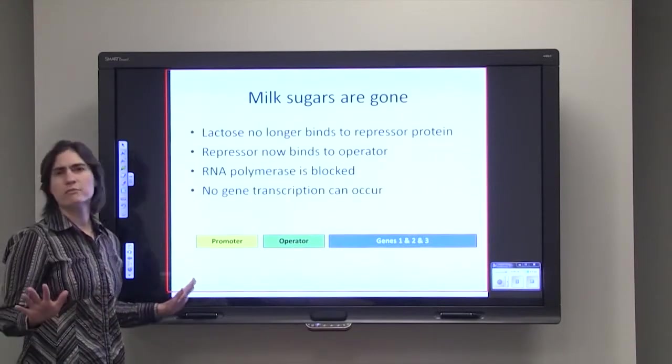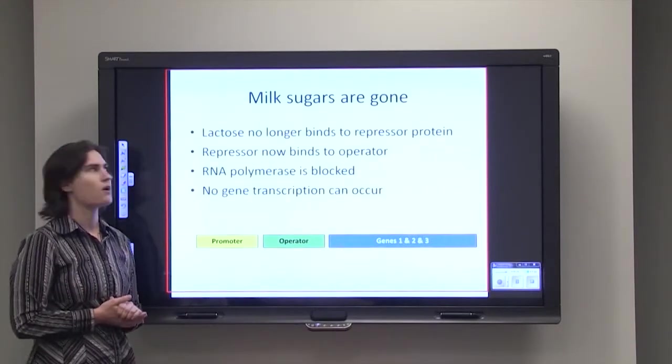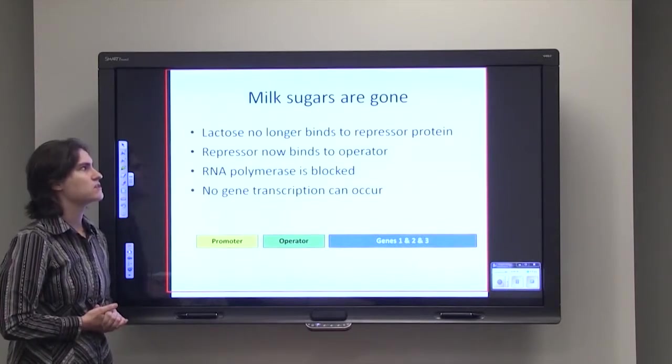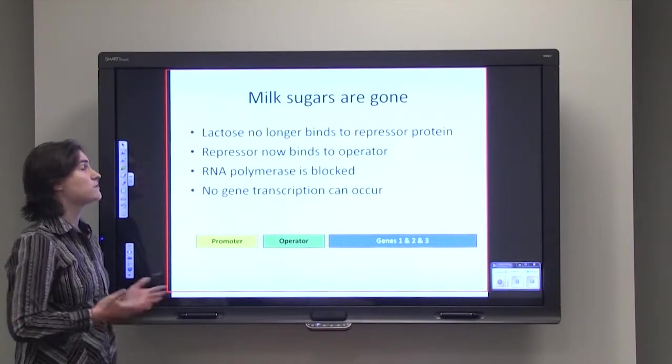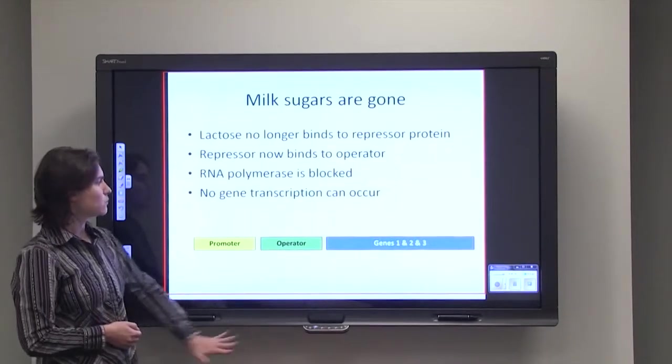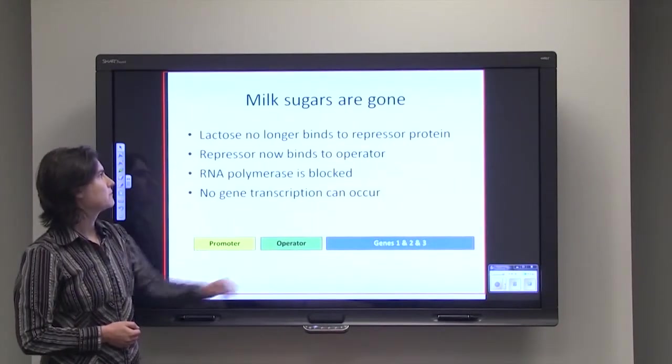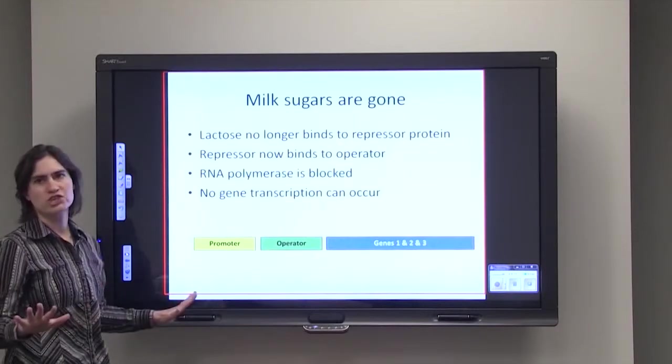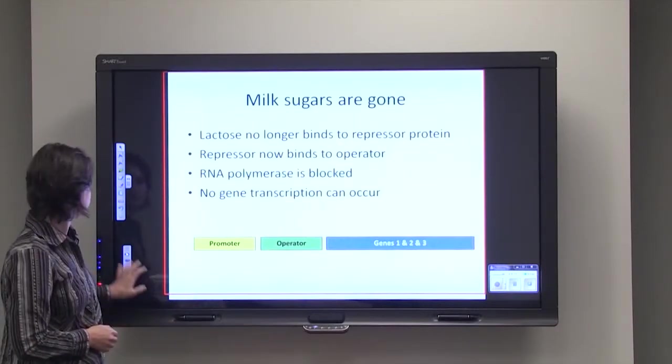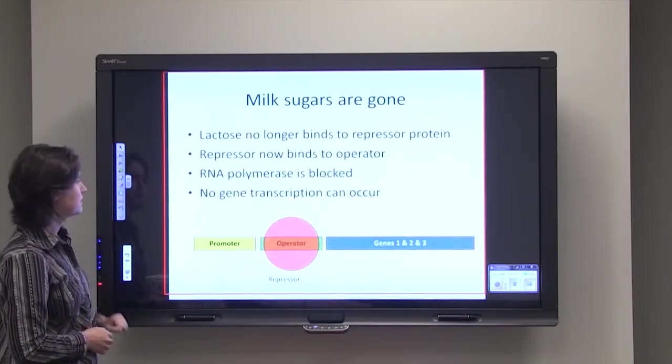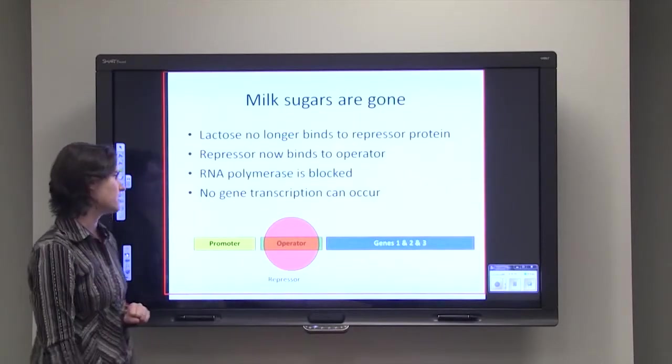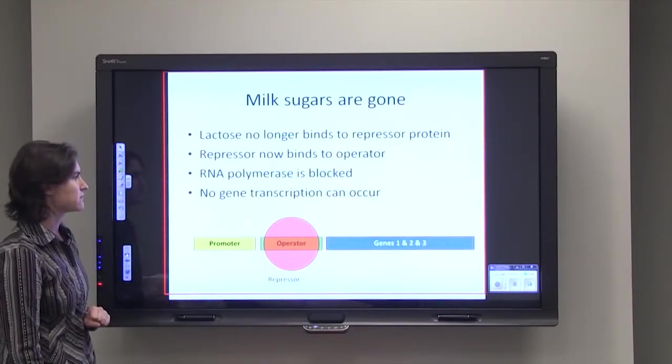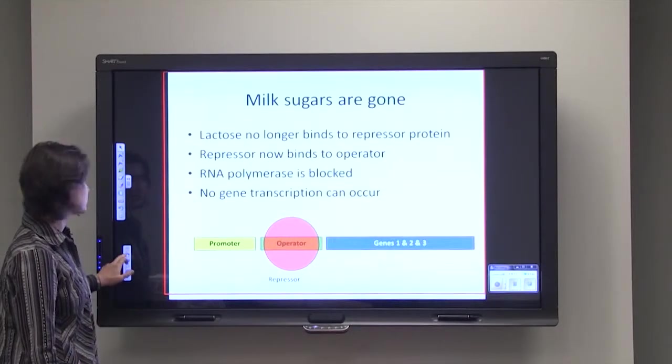Now once all of the milk sugars are digested and gone, lactose is no longer binding that repressor protein. So now that repressor protein can once again bind the operator. This physically blocks the RNA polymerase, and so no gene transcription takes place. So again, the repressor protein comes and physically blocks the RNA polymerase from being able to go on to do gene transcription.